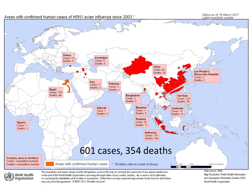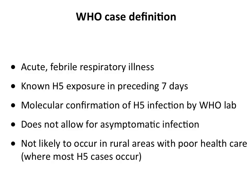Every time someone dies of H5N1 it is reported in the press. But 600 cases is nothing — there are millions and millions of cases every year, and in the US 3,000 to 40,000 people can die of seasonal flu. For some reason, H5N1 gets additional attention, and you'll see why as we go through this story.